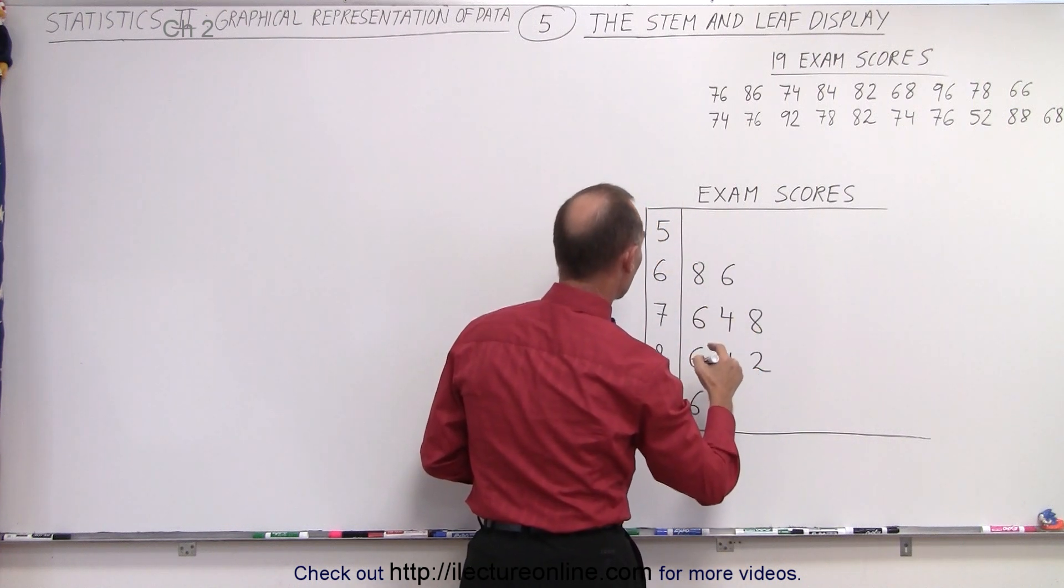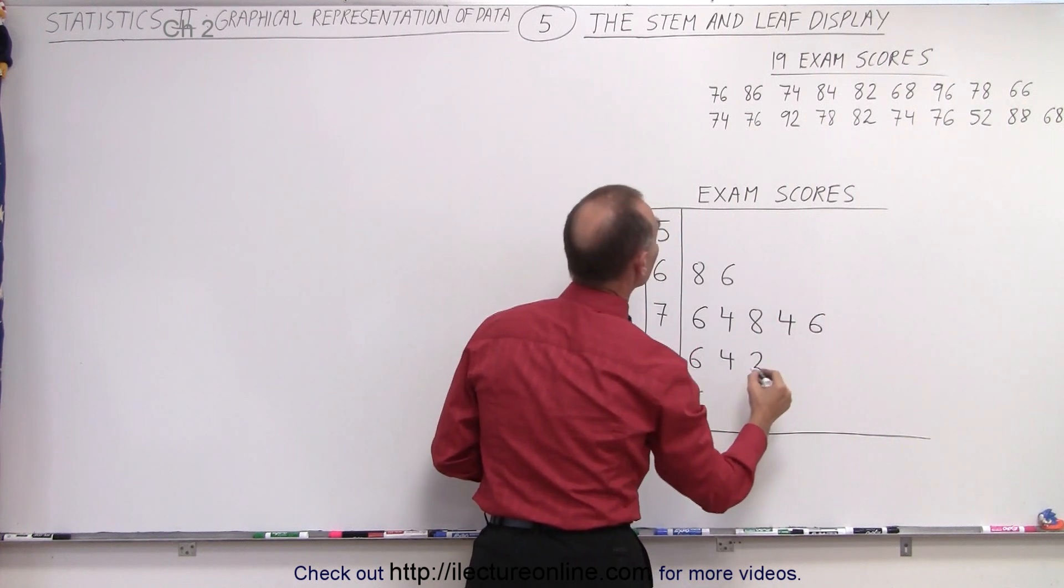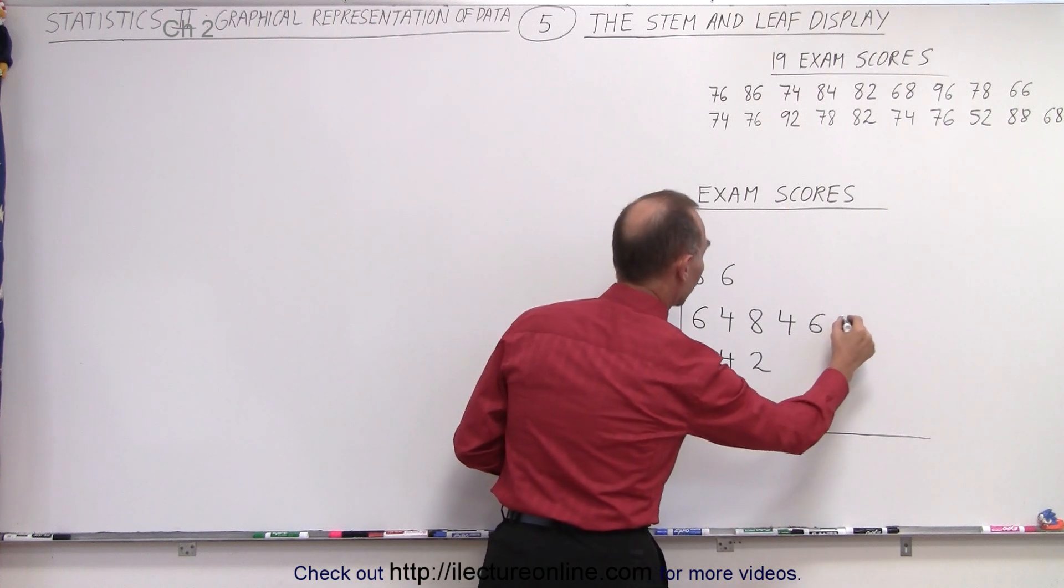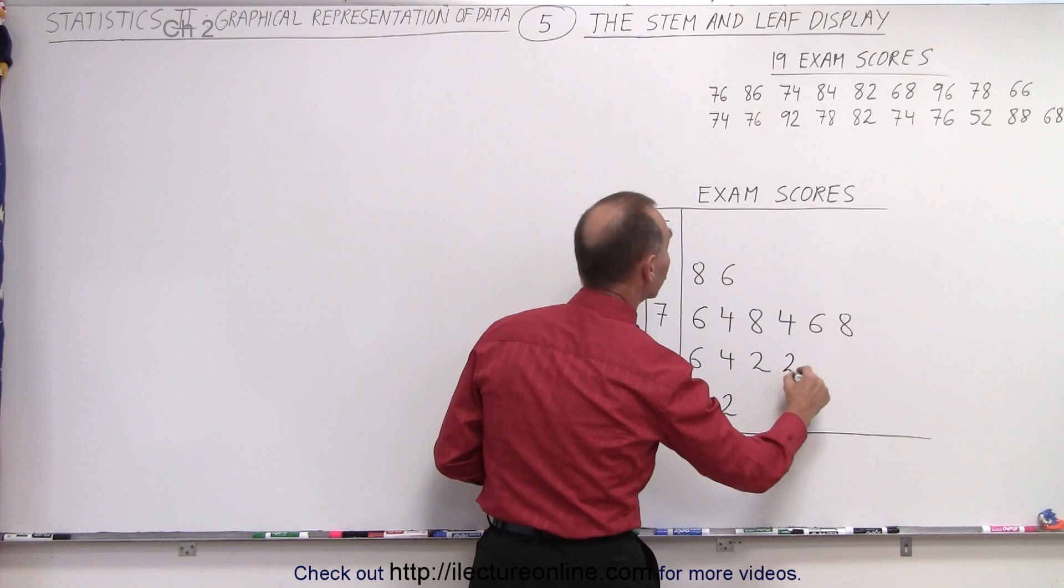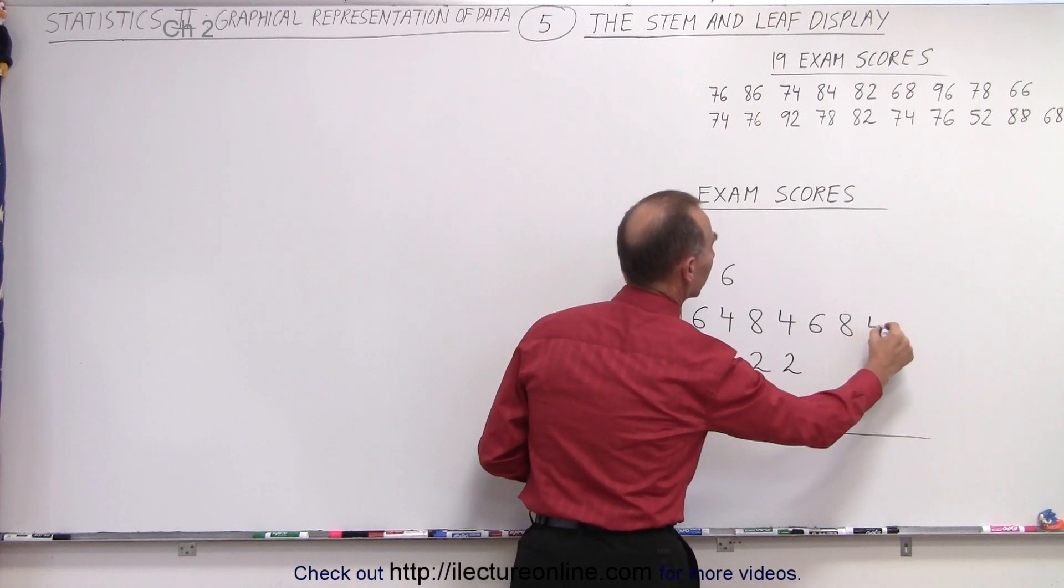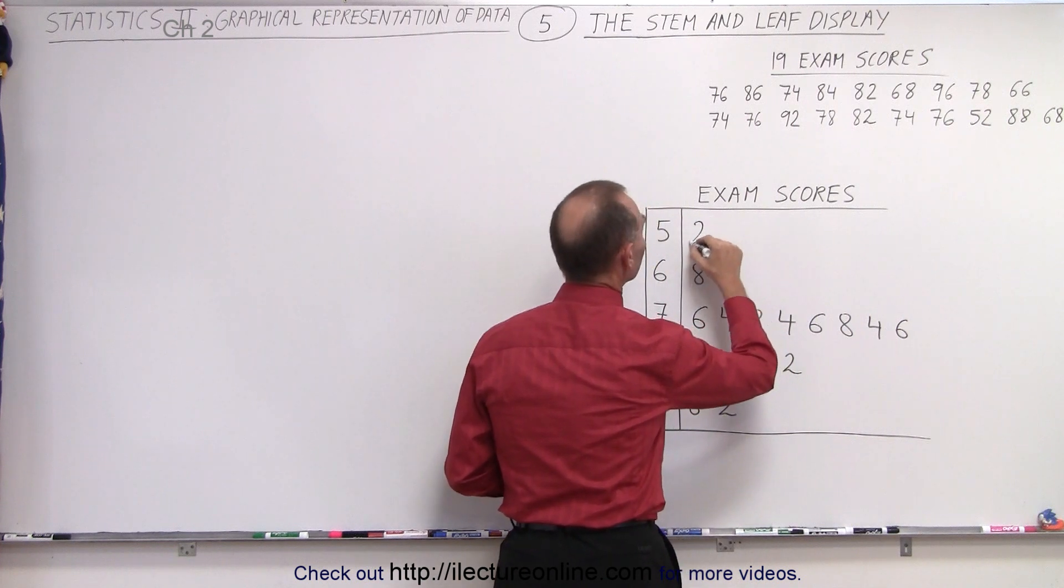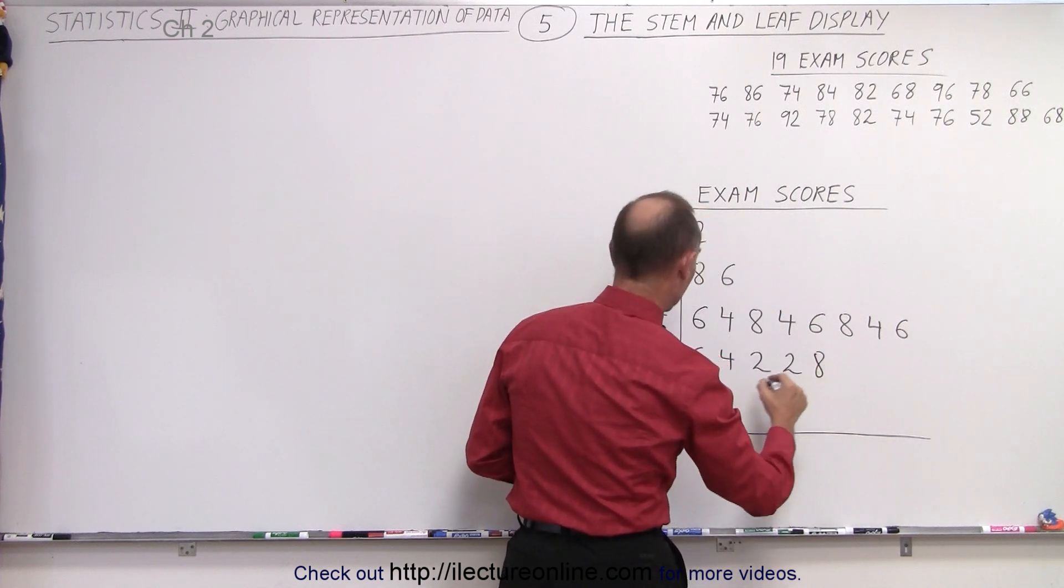Second row we have 74, 76, 92, 78, 82, 74, 76, 52, 88, and 68.